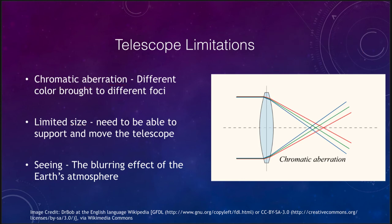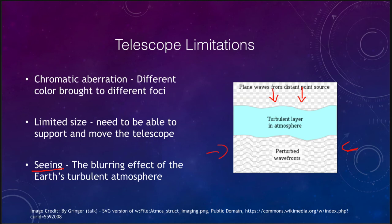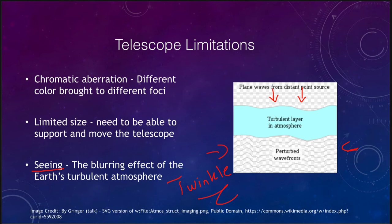One of the biggest limitations for all telescopes is seeing — the blurring effect of turbulence in the Earth's atmosphere. Light waves come in nice and smooth through empty space but are disturbed passing through the atmosphere, making it much harder to get a clear image. If you've seen stars twinkle, that is caused by this turbulent atmosphere. At the International Space Station or on the moon, stars do not twinkle at all — it is purely an effect of Earth's atmosphere. Seeing limits the resolution of any telescope here on Earth.